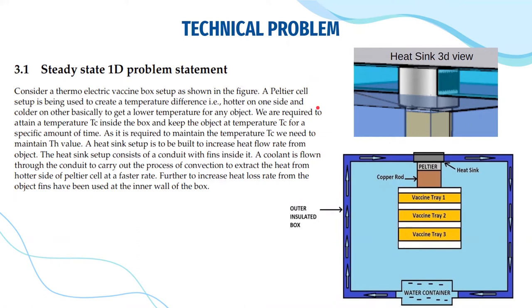So, now let us see what technical problem are we solving. So, now consider a thermoelectric vaccine box setup as shown in the figure. A Peltier cell setup is being used to create a temperature difference that is hotter on one side and colder on the other side. We are required to attain a temperature TC inside the box to keep the object at temperature TC for a specific amount of time. As it is required to maintain the temperature TC, we need to maintain the TH value. A heat sink setup is to be built to increase the heat flow rate from the object. The heat sink setup consists of a conduit with fins in it. A coolant is flown through the conduit to carry out the process of convection to extract the heat from the hotter side of the Peltier cell at a faster rate. Further, to increase heat loss rate from the object, fins have been used at the inner wall of the box.